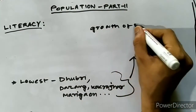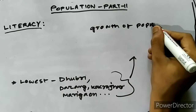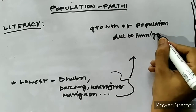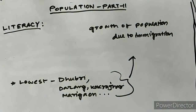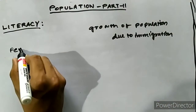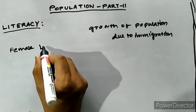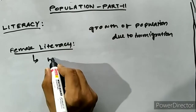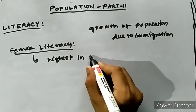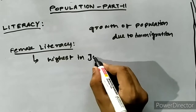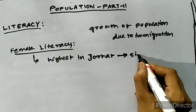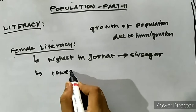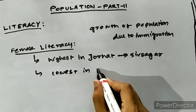Similarly, for female literacy rate, just as in general literacy, Jorhat has the highest literacy rate followed by Sivsagar. Dhubri has the lowest female literacy rate. The male-female literacy rate difference is notably visible in Assam's district-level data.